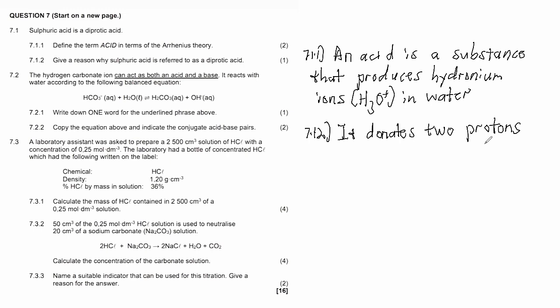7.2 says the hydrogen carbonate ion can act as both an acid and a base. It reacts with water according to the following balanced equation. 7.2.1 says write down one word for the underlined phrase, and we know that refers to an ampholyte.